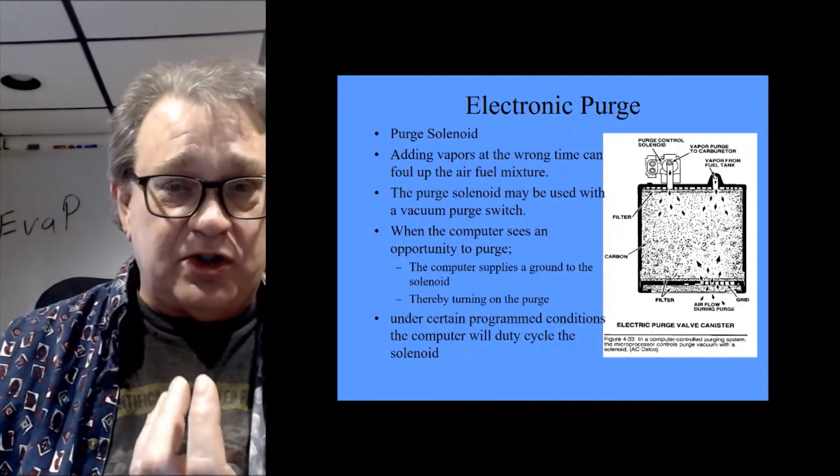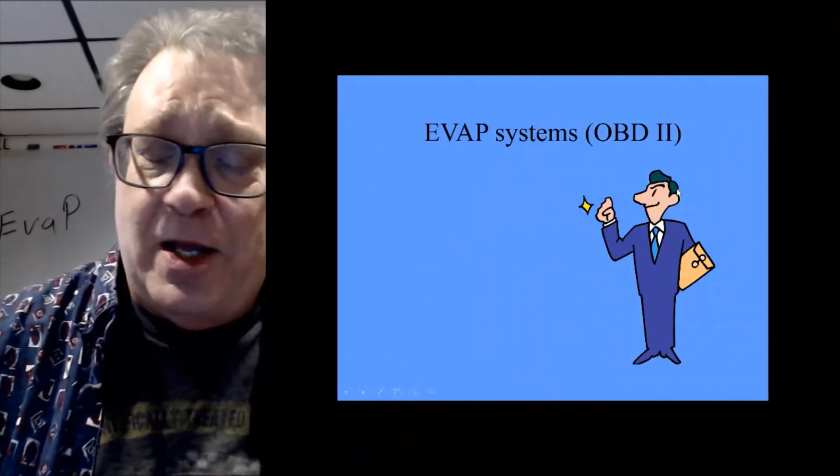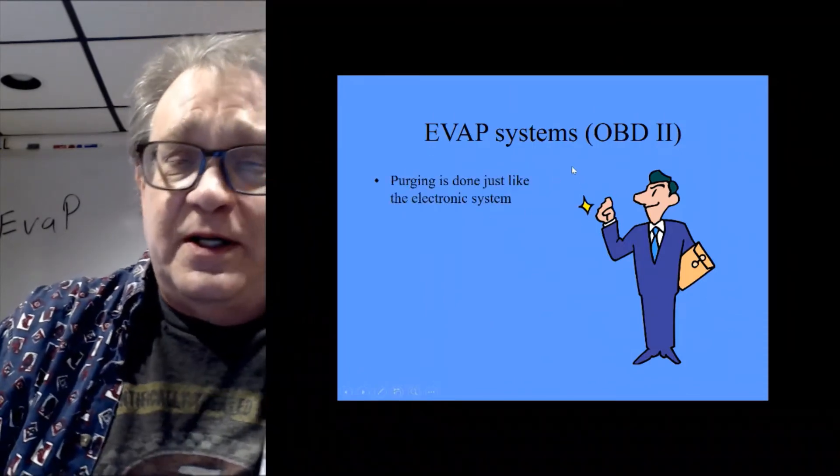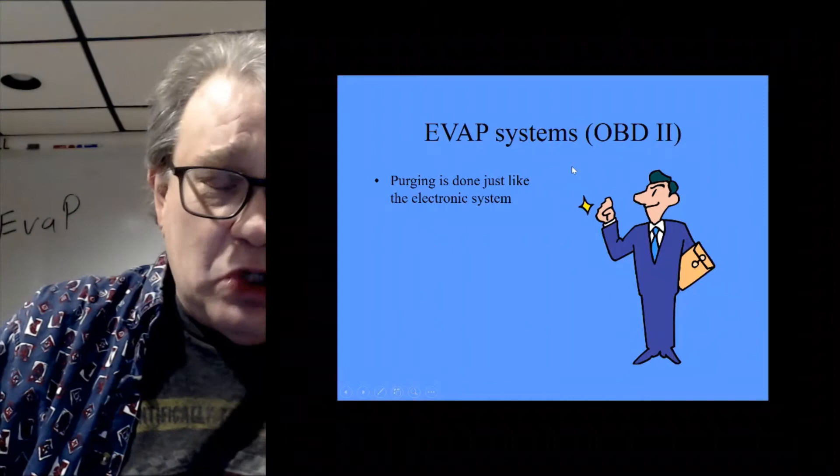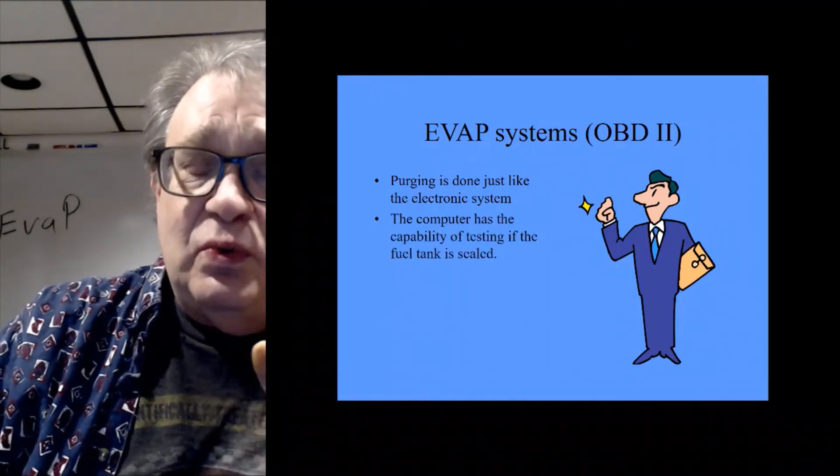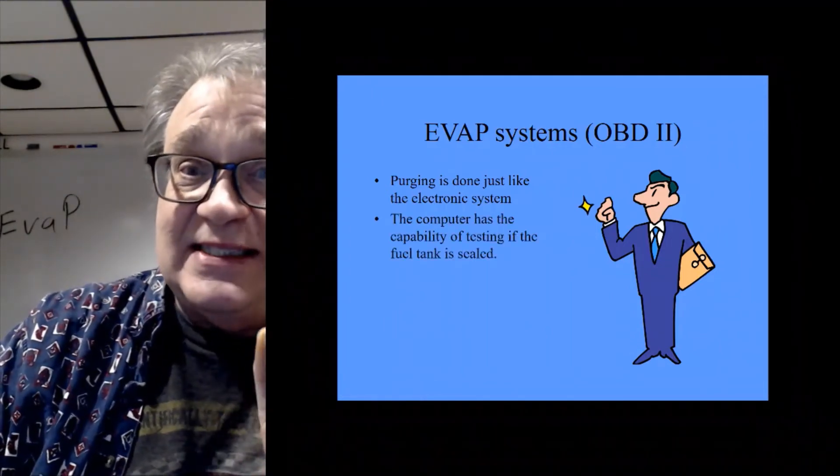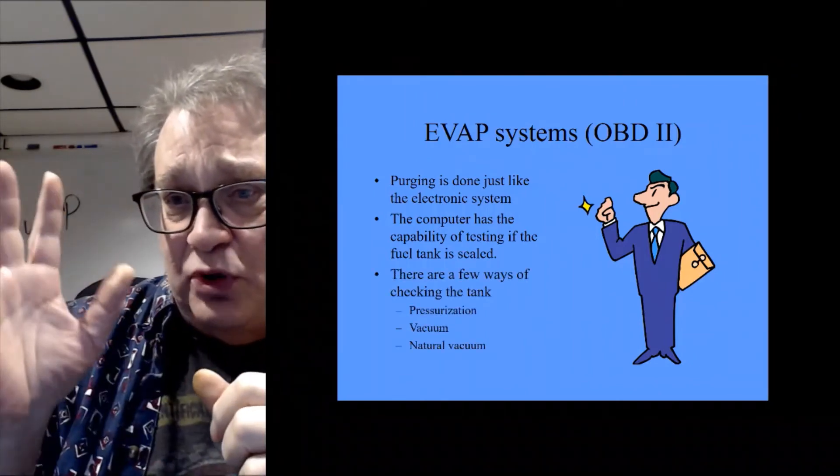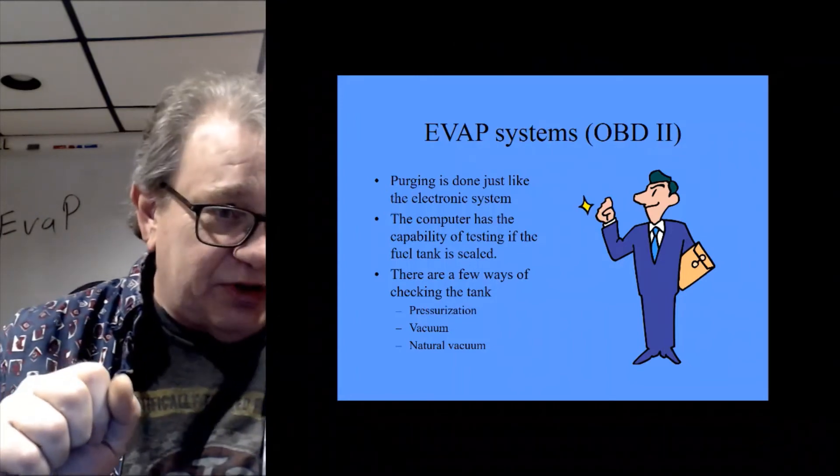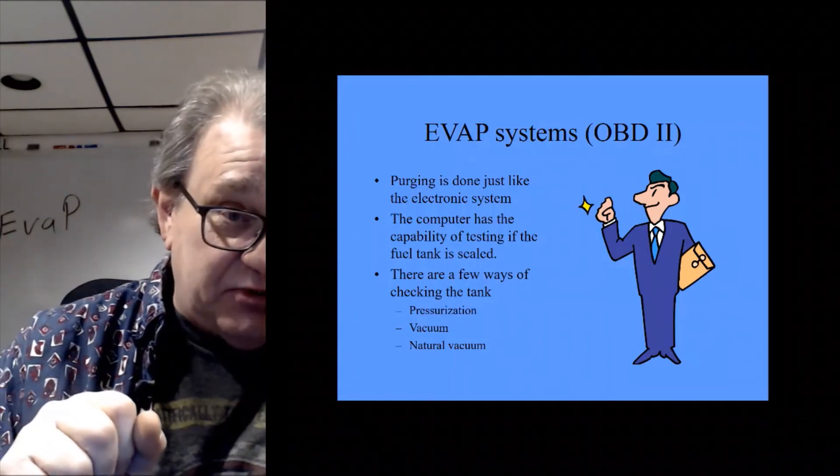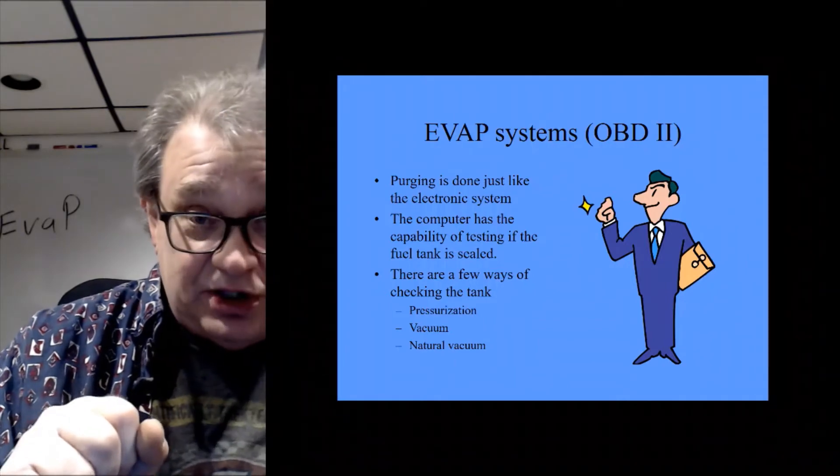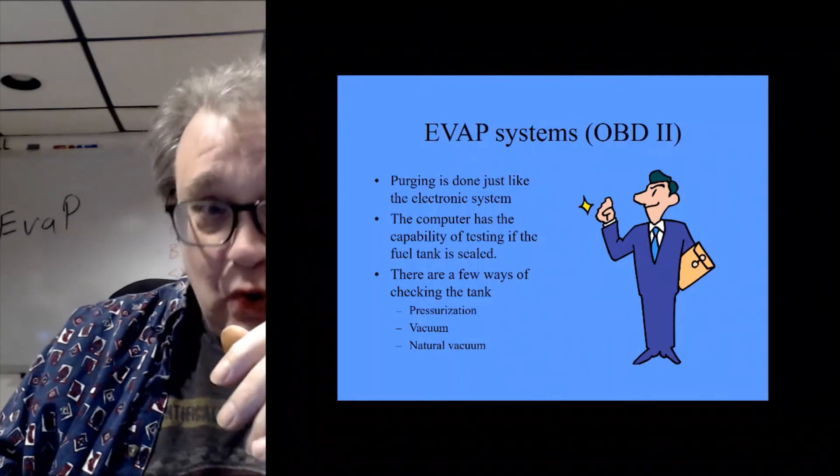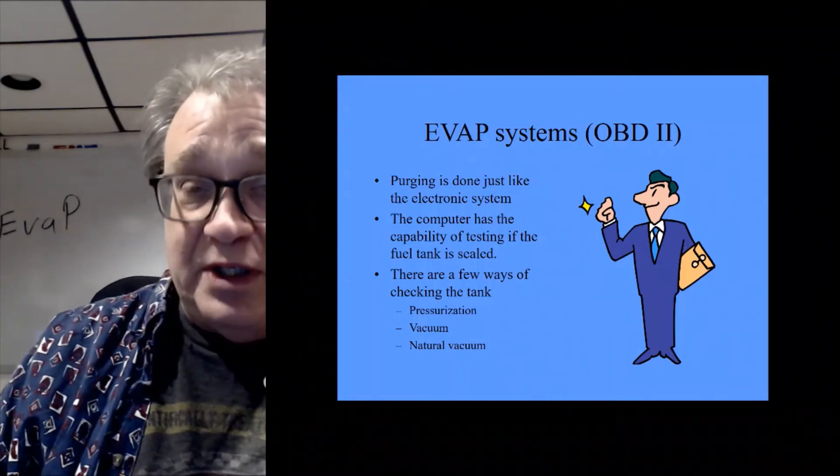New stuff, the OBD2 stuff, we need to check. I mean, the purging is still done the same, but we have to test to make sure that the system can seal. So rather than just venting straight out to fresh air, what they would do is they put a vent solenoid on. So you got purge solenoid that takes the hydrocarbons out of EVAP, puts it in the engine to be burned, and then we have a vent one that the computer can open and close when it wants to.